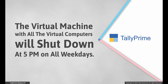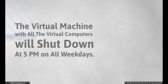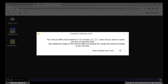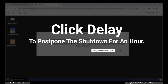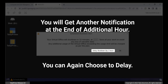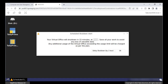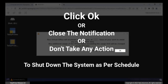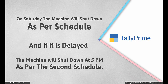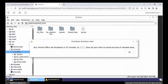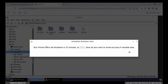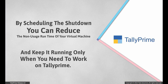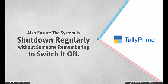The virtual machine with all virtual computers will shut down at 5 PM on all weekdays. If delay shutdown is enabled, a notification appears to delay the shutdown. When you click Delay, the shutdown is delayed by an hour and you will get another notification at the end of that additional hour. You can again choose to delay. When you click OK, close the notification, or take no action, the system will shut down as per the schedule. On Saturday, the machine will shut down at 2 PM, and if delayed, at 5 PM as per the second schedule — you will get a shutdown message without the option to delay. By scheduling the shutdown, you can reduce the non-usage runtime of your virtual machine and keep it running only when needed for TallyPrime. You can also ensure the system shuts down regularly without someone having to remember to switch it off.